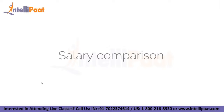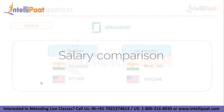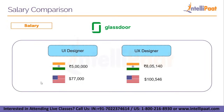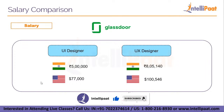According to Glassdoor, the average salary for a UI designer in India is about 5 lakh rupees, and in the US it is around $77,000. For UX designers, the average salary in India is around 8 lakh rupees, and in the US it is approximately $100,000 on average.